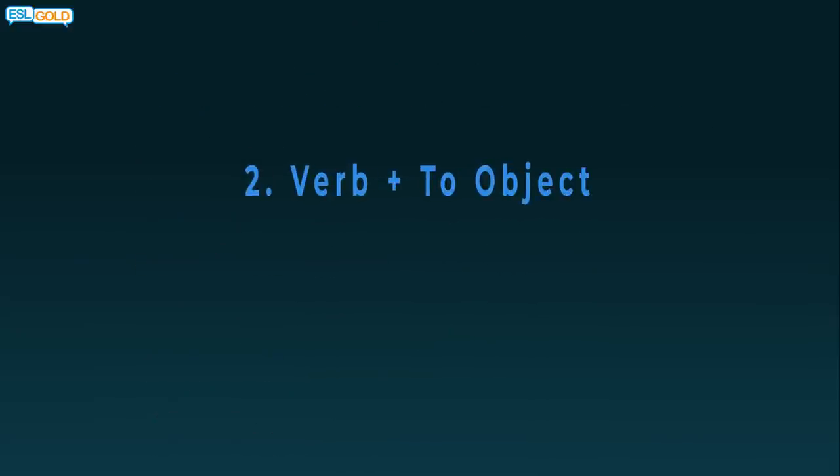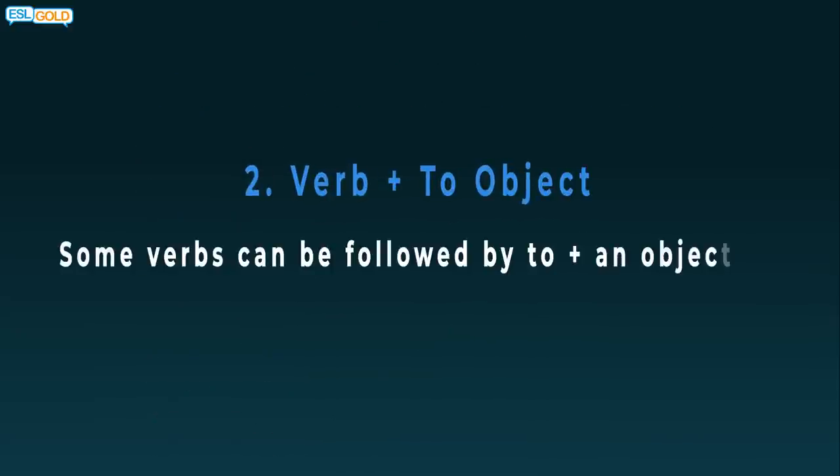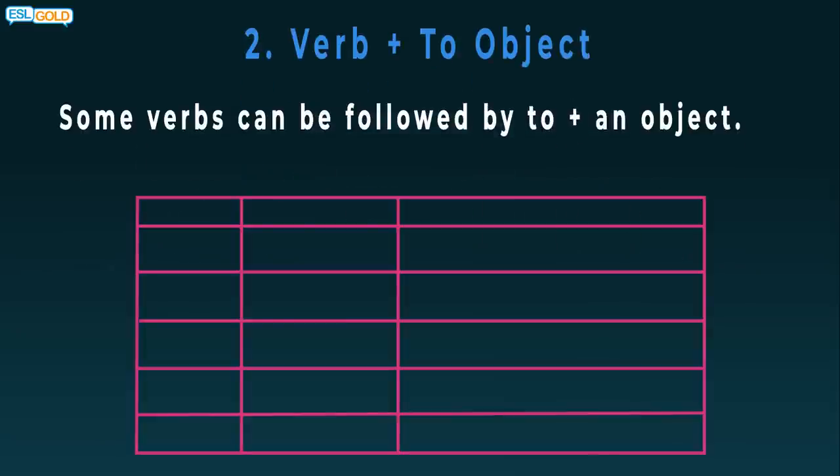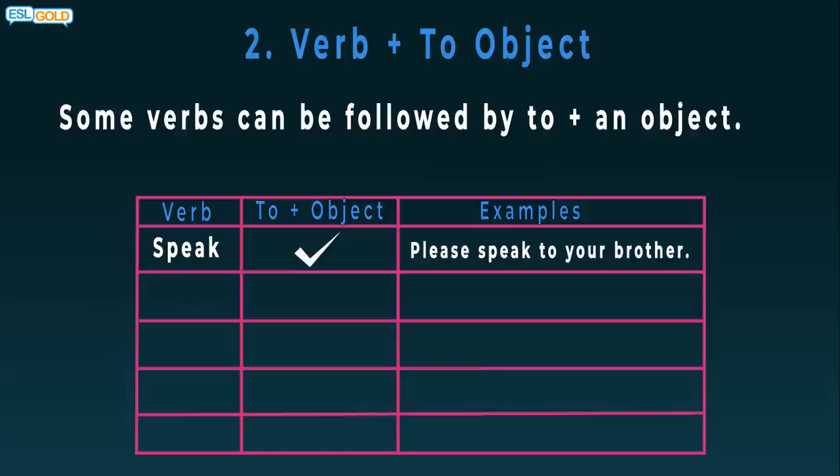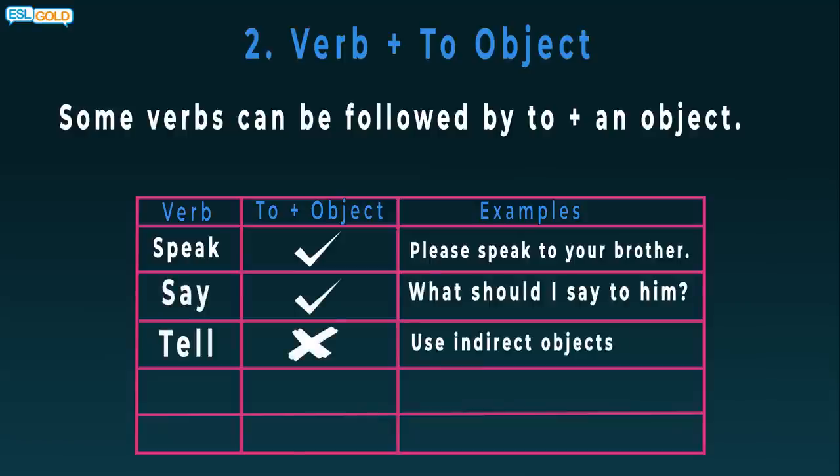2. Verb plus to object. Some verbs can be followed by to plus an object. Speak: yes. Please speak to your brother. Say: yes. What should I say to him? Tell: no. Use indirect objects instead.